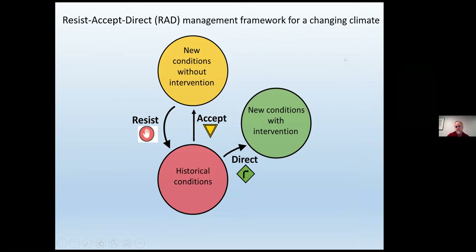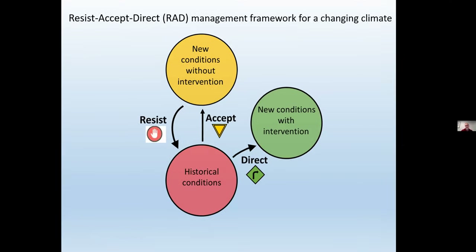This framework is based on the idea that we have three options when faced with changing climate conditions. Starting from historical conditions, without any intervention, our system will move to a new state. We can try to resist that change by doing various things to maintain what had been in the past, or maybe restoring back to some historical condition. Another option is to simply accept that things are changing and not try to resist, but live with the new environment. But there's a third option — the direct option — which is the most innovative part of this RAD framework: are there things we can do that will move the system into some new set of conditions that would be desirable by humans?